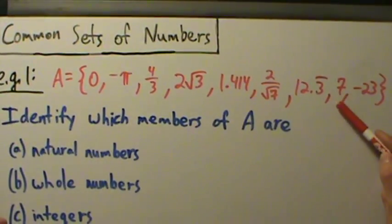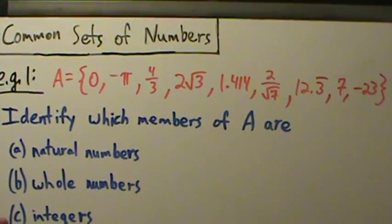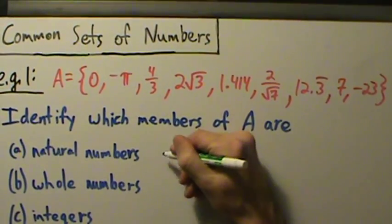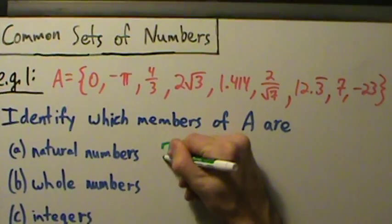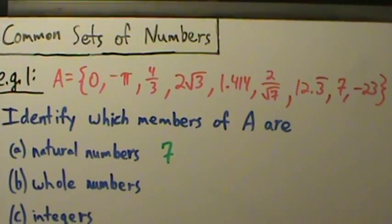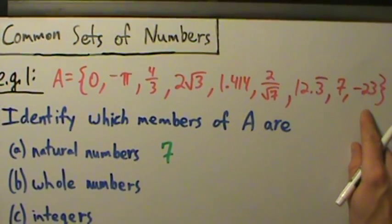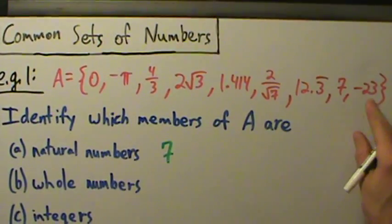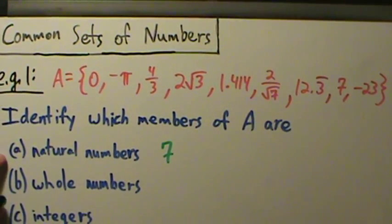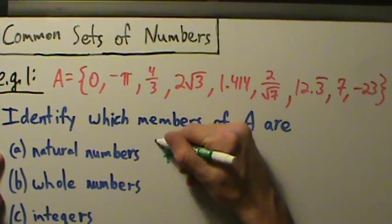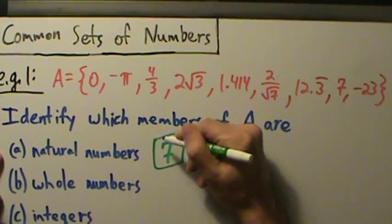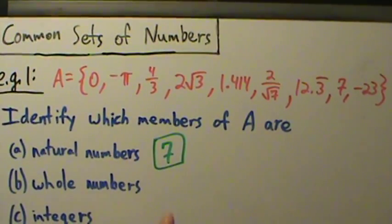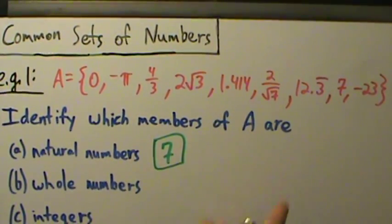Seven, yeah, seven's a natural number, right? So we'll go ahead and write that down. But natural numbers have to be positive, so negative 23 does not count. So for part A, our answer is just seven. Seven is the only number in here that's a natural number.